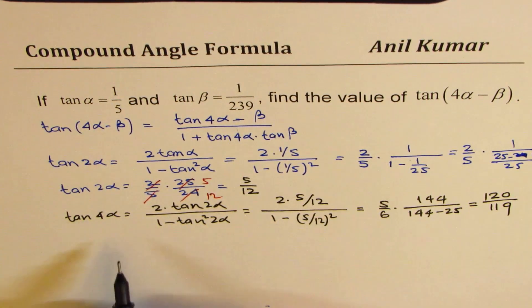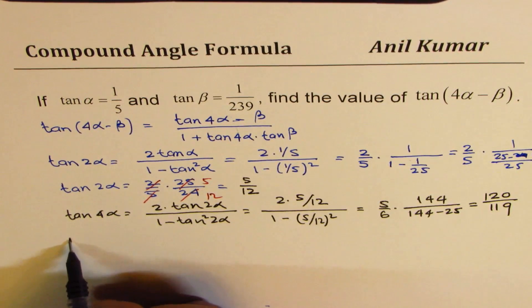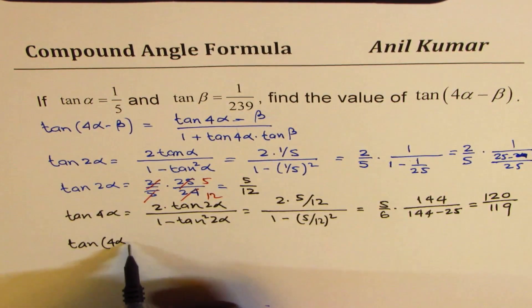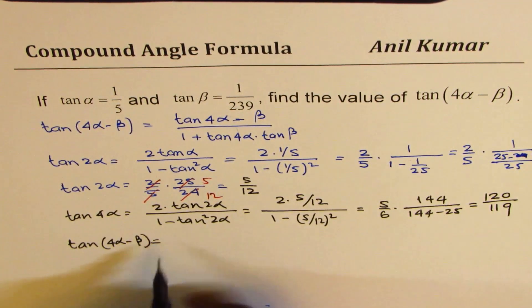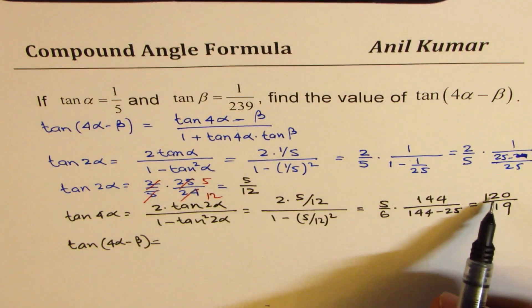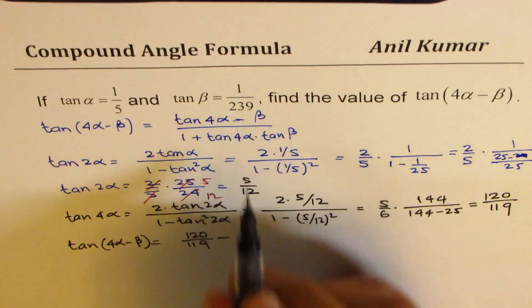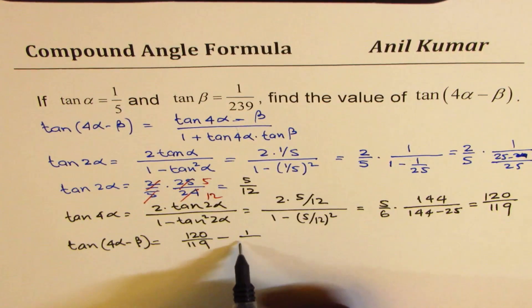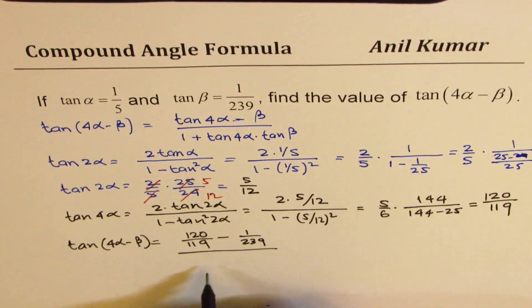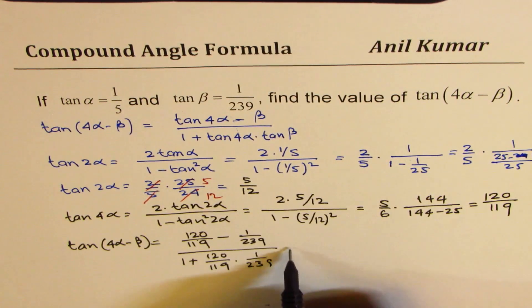So we know what tan 4 alpha is, and now we can use this formula. So we have tan 4 alpha minus beta equals to tan 4 alpha is 120 divided by 119, minus tan beta, minus 1 over 239, divided by 1 plus product of these two, 120 over 119 times 1 over 239. Correct?